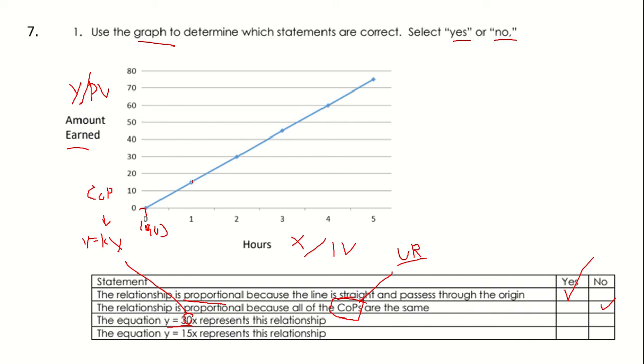To find our COP, we can look at where our point x equals 1 and see what our corresponding y value is. So x equals 1, and our corresponding y value is going to be 15. So y equals 30x is not going to be our relationship because our COP is going to be equal to 15 instead.